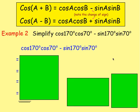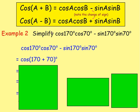Example two: simplify cos 170 cos 70 take away sin 170 sin 70. So for this, we're not wanting to expand it — we want to simplify, so we want to go back the way. If you look at this, it's got cos something, cos something, take away, sin something, sin something. Which one looks just like that? Well, it's your top line — cos A plus B. So here, A and B are 170 and 70. So you can put it back into your brackets. You've got cos of 170 plus 70.